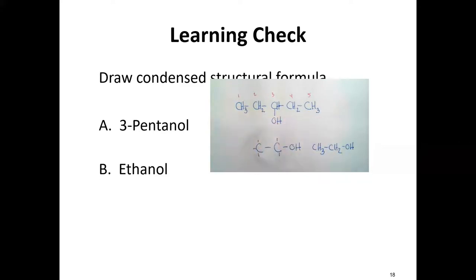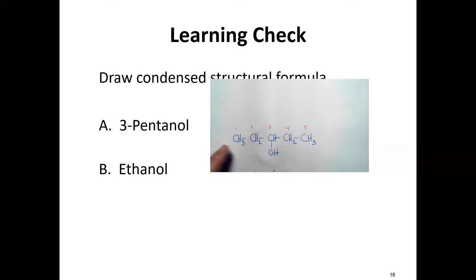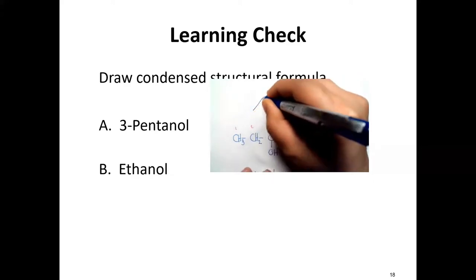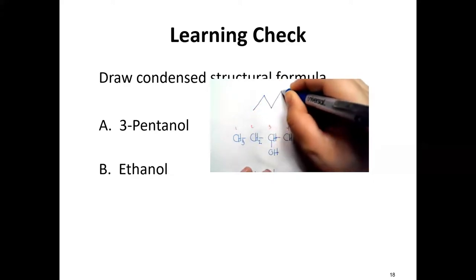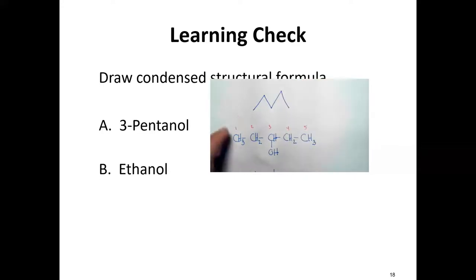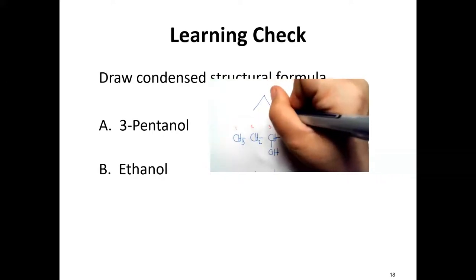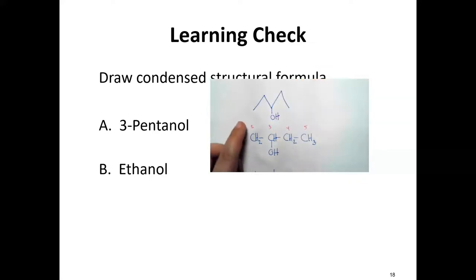For a skeletal formula of 3-pentanol: draw pentane as a skeletal — one, two, three, four, five carbons. A 3-pentanol means carbon three has the OH group. Going one, two, three — the OH is drawn down here. This is the line-bond or skeletal drawing for 3-pentanol.